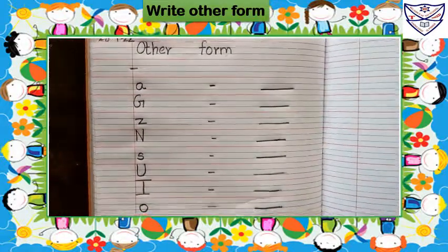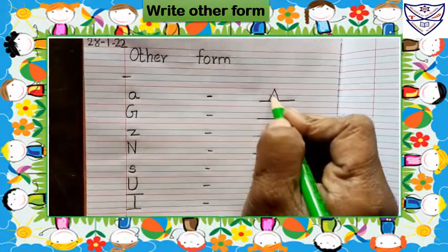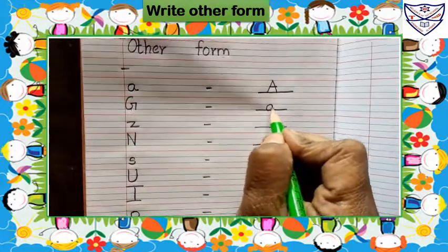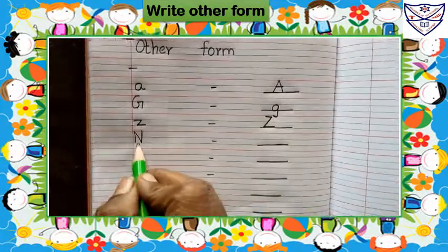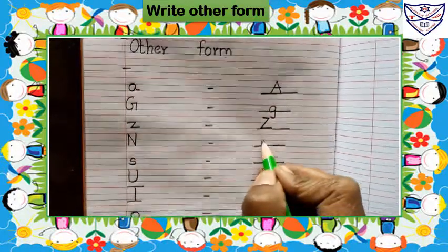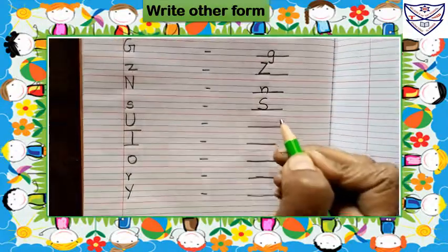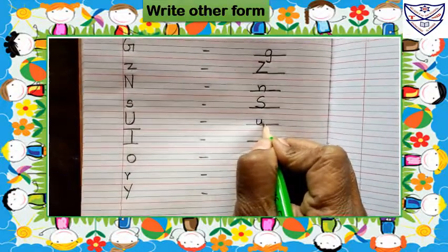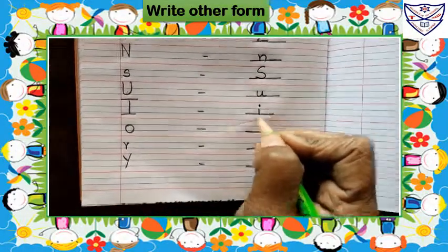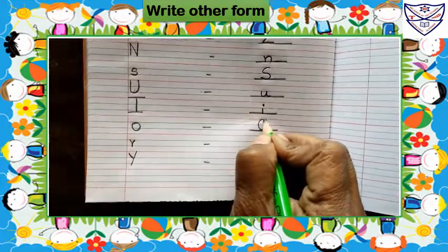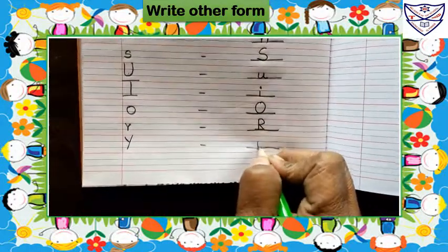Now we have to write the other form. Here it is small a, so we will write here capital A. Capital G, small g. Small z, capital Z. Capital N, small n. Small s, capital S. Capital U, small u. Capital I, small i. Small o, capital O. Small r, capital R. Capital Y, small y.